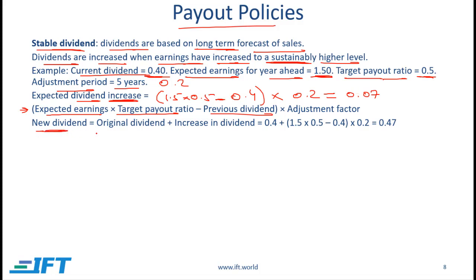The new dividend is the original dividend plus the increase. The original dividend was 0.4 and the increase is 0.07, so the new dividend is expected to be 0.47.